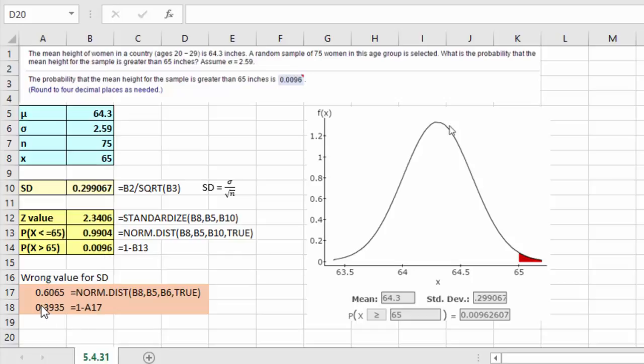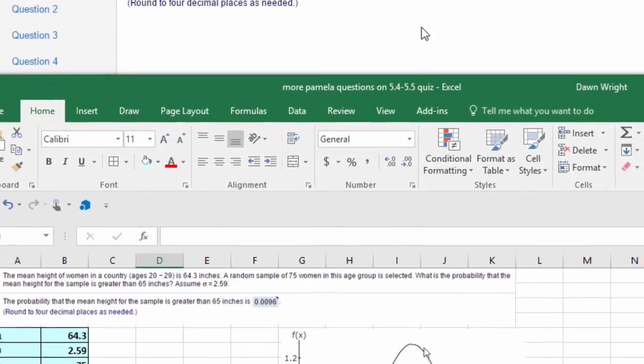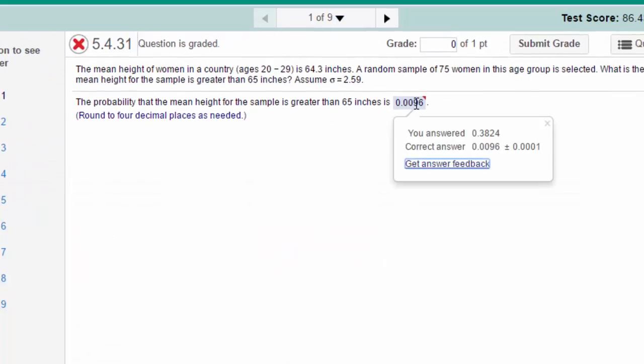You used the standard deviation of the population B6, and that gave a value of 0.6035. You subtract that from 1 to get 0.395. I think you used slightly different technology, and that is probably why there's a difference there in your value, but I think that's what you did.